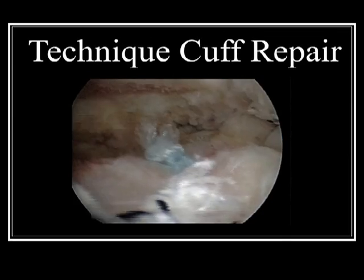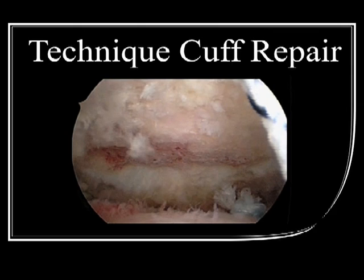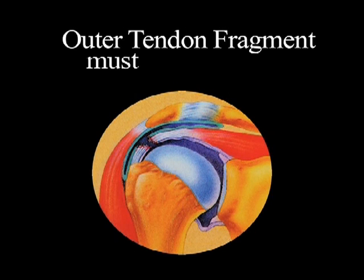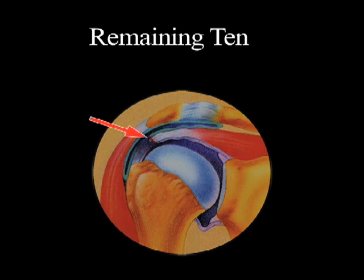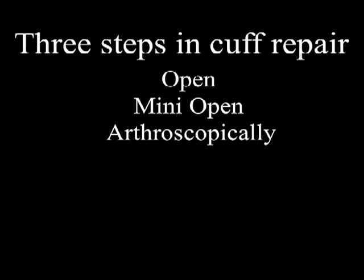At this point, I believe we have enough background to go ahead and discuss the actual technique involved in rotator cuff repair. In summary, in order to repair a torn rotator cuff tendon, the outer fragment — which does not have an adequate blood supply to support repair — must first be excised. Following this, the remaining inner tendon with its attached muscle must then be advanced laterally and secured into the shoulder bone. There are three steps in rotator cuff repair, whether the repair is performed with open or mini-open technique or arthroscopically.